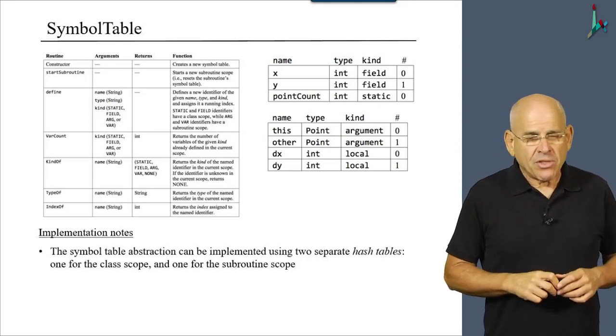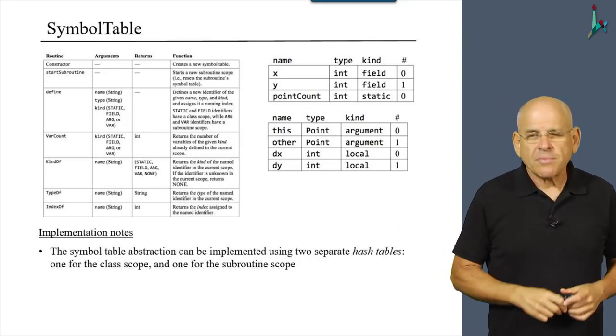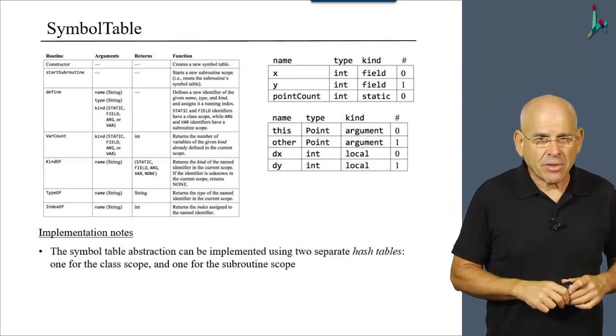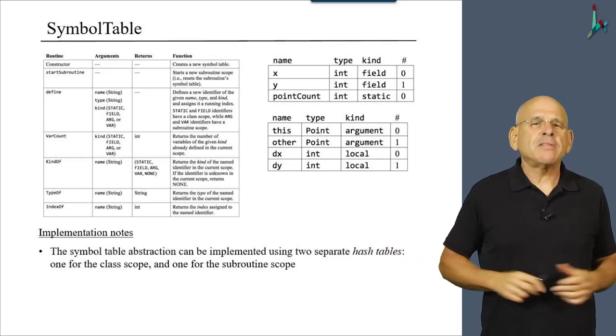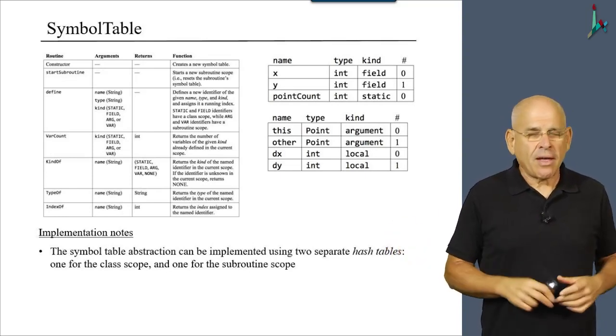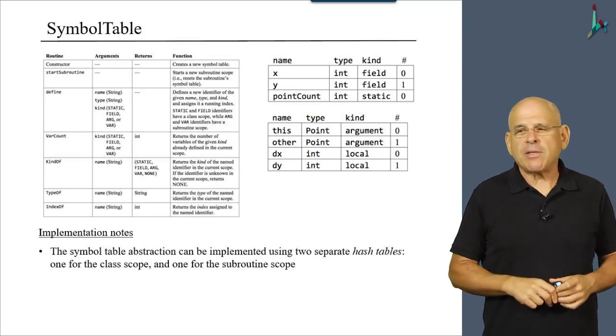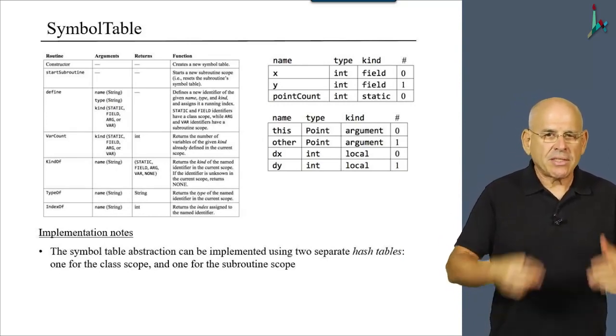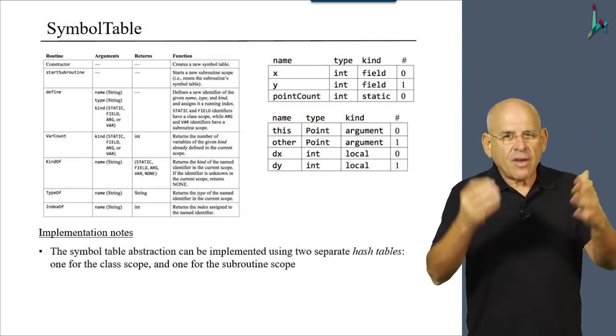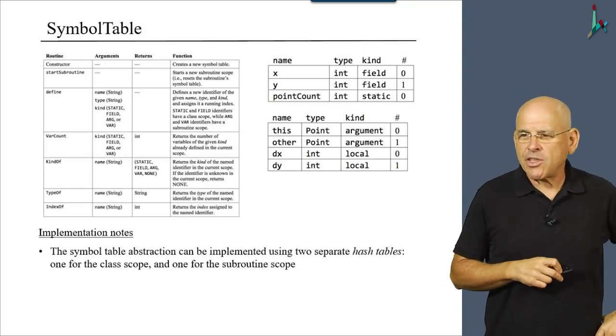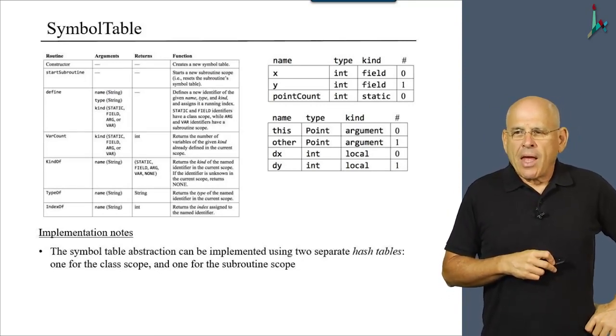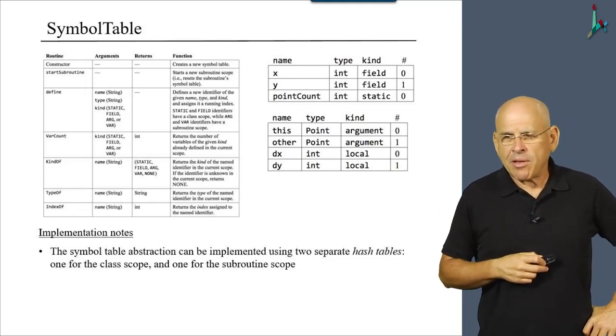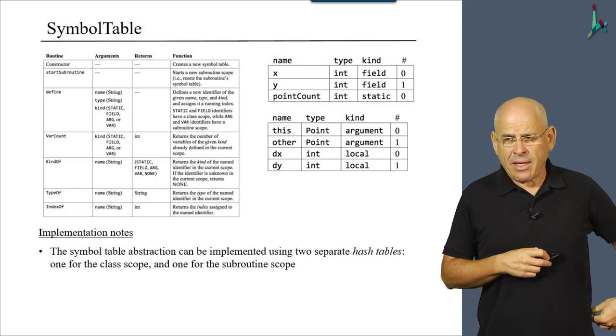The symbol table abstraction that we discussed all along can be implemented using a classical data structure called the hash table. And if you're not sure what is a hash table, you're welcome to read about it in the internet and look up hash tables in the library that supports your language. Whether it's Java or Python, every modern language has a hash table abstraction somewhere.